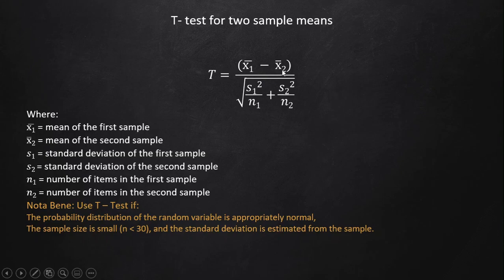The numerator is divided by the square root of the standard deviation of the first sample, s subscript 1, squared, all over n subscript 1, plus the standard deviation of the second sample, s subscript 2, squared, divided by n subscript 2.